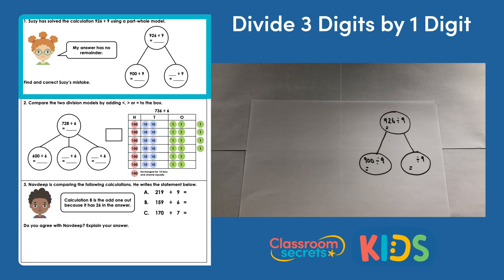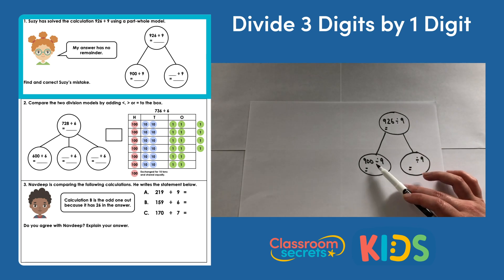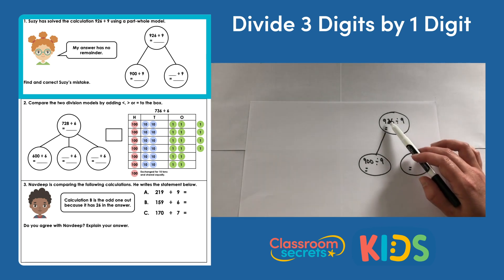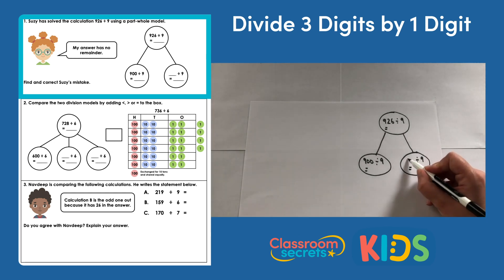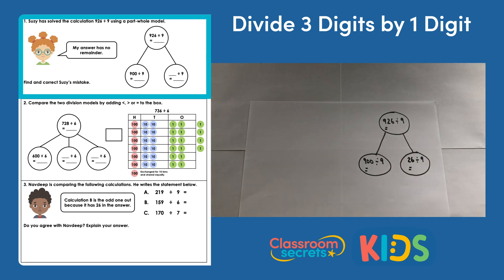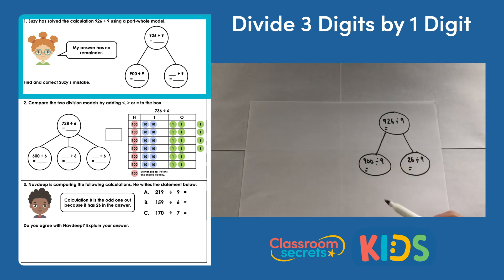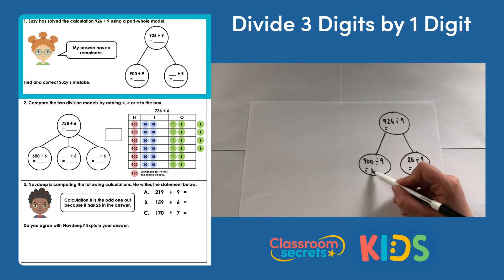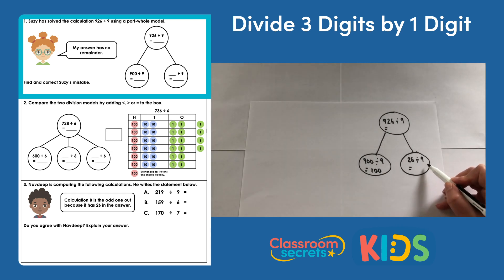We can see that the part-whole model has already started to be partitioned. If we have 900 divided by 9, that means our tens and ones must be placed in the remaining part, so I can put 26 divided by 9 in that space. Let's start with our hundreds, because we always start with the highest value column — in this case that's our hundreds. 900 divided by 9 is 100.